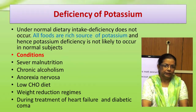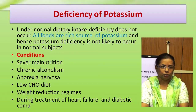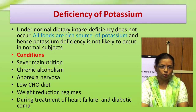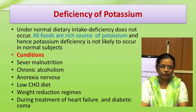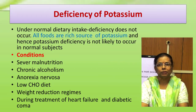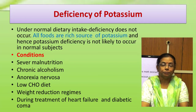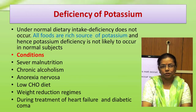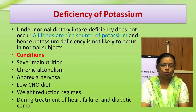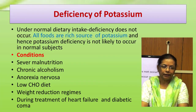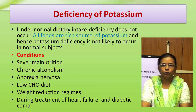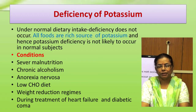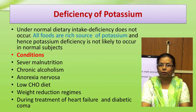Under normal dietary intake, deficiency does not occur, as all foods are a source of potassium. However, certain conditions where potassium deficiency may occur include severe malnutrition, chronic alcoholism, anorexia nervosa (a type of eating disorder), low carbohydrate diet, weight reduction regimes, and during treatment of heart failure with certain drugs and diabetic coma with insulin.